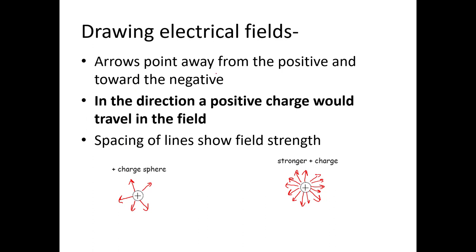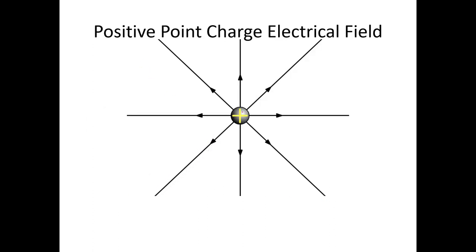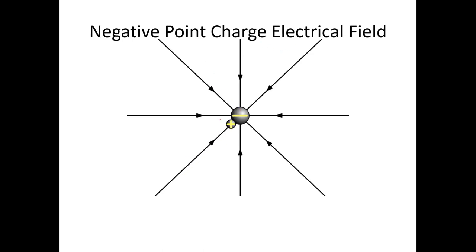When we draw electrical fields, we always draw arrows pointing away from the positive. If it's an electric field, the arrows are always drawn away. The stronger the field, the more electrical field arrows we draw — that represents the spacing of the lines. Whenever you think about the direction of the electrical field, if you drop a positive charge in that field, it's going to travel away from the positive. If this were a negative electrical field and you placed a positive charge there, it would be attracted, so the electrical field arrows are drawn inwards.